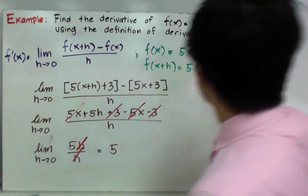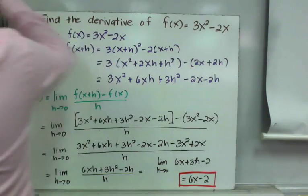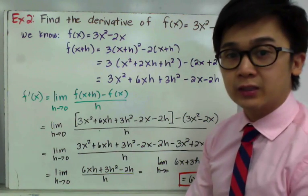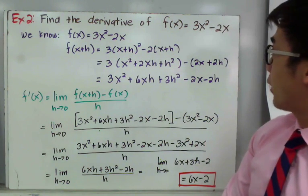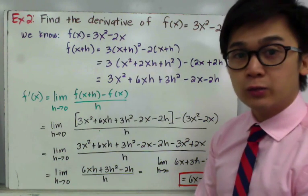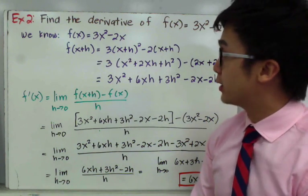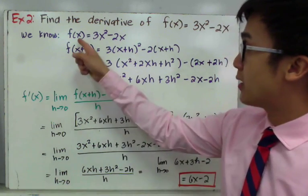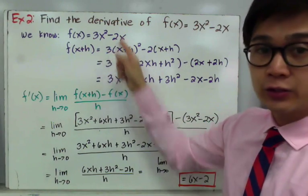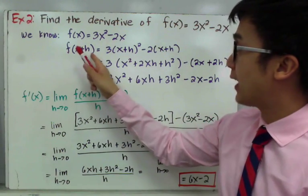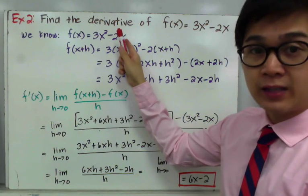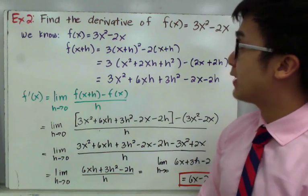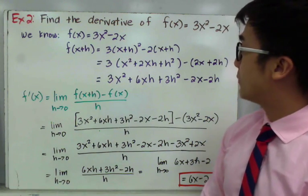For our second example, we're going to find the derivative of f of x, which is given by 3x squared minus 2x. Just like the first example, we set up our formula by simplifying f of x plus h. The given function is 3x squared minus 2x, and f of x plus h is found by replacing x with x plus h, giving us 3 times the quantity x plus h squared, minus 2 times the quantity x plus h.